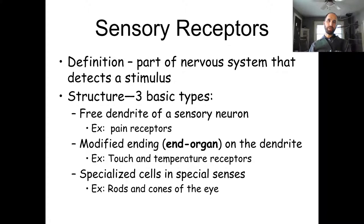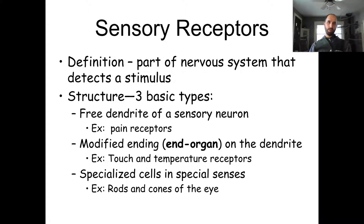A receptor — the book defines it as a part of the nervous system that detects a stimulus, which isn't very descriptive. A better definition is that receptors are translators: they translate whatever kind of sensory stimuli you're receiving into action potentials.